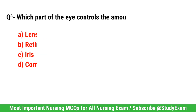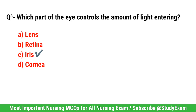Question No. 3. Which part of the eye controls the amount of light entering? Correct option is C. Iris.